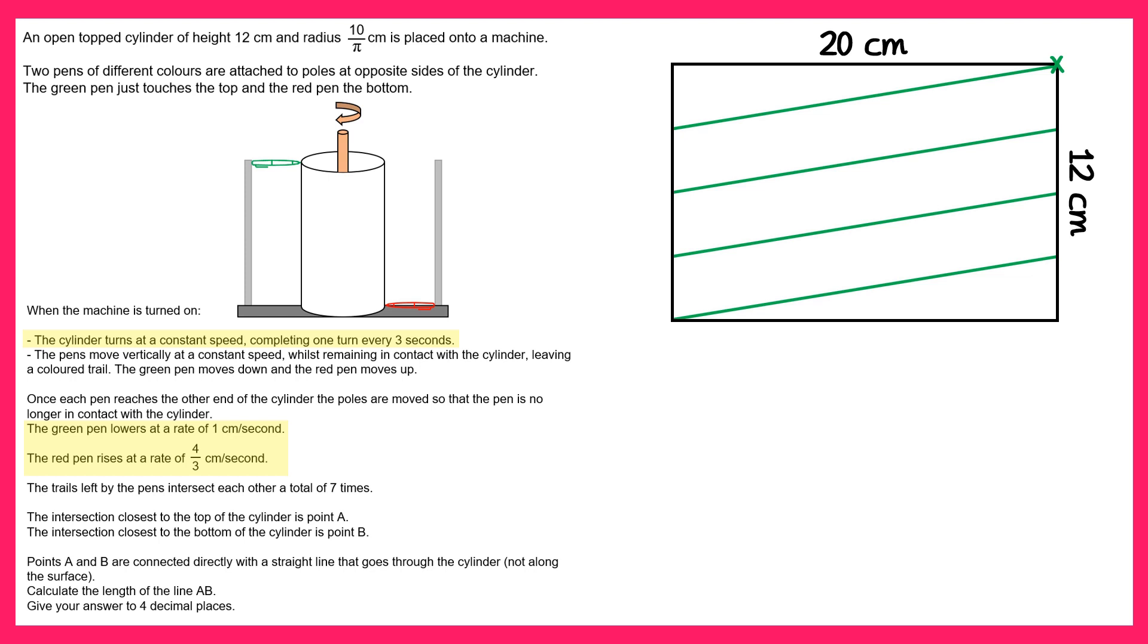Now the location for the start of the red pen is on the opposite side of the cylinder and also at the bottom so it would be here. And those trails are going to go in different directions since it's rising up. So the trail for the red pen needs to go across the cylinder three times so it will look something like this.